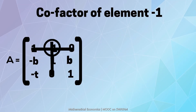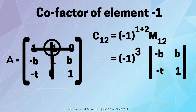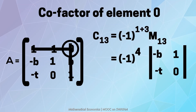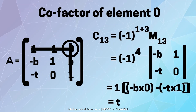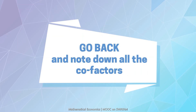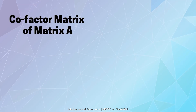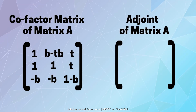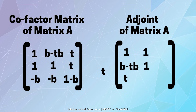The cofactors of the remaining elements of coefficient matrix A are obtained by using the same formula. I would want you to go back and note down all the cofactors. This is the cofactor matrix of matrix A that we have just obtained, and the adjoint of A is given by transposing the cofactor matrix, that is by interchanging the rows and columns.